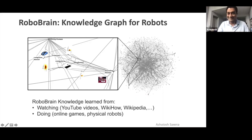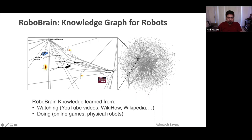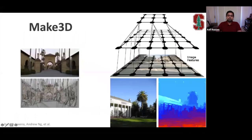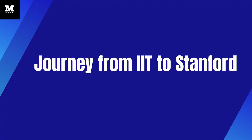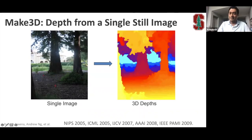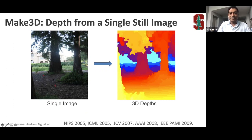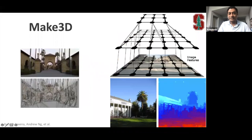Tell us about your journey in machine learning and computer vision starting from IIT to Stanford. At IIT I was working with Amitava Mukerji on projects like isomap — a paper which takes a high-dimensional data point into a low-dimensional non-linear subspace. When I joined Stanford I met Andrew Ng, and we worked on a very interesting problem: given a single still image, can you compute a 3D model out of it? We built deep learning methods to do that.